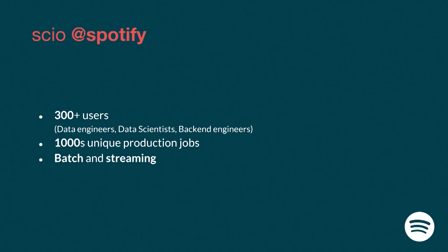A bit of context about Scio: at Spotify we have roughly 300 people using it — from data engineers to marketing engineers and also data scientists, so a very different kind of people. We have roughly 3,000 jobs in production, both batch and streaming. Outside of Spotify, a few big companies are using it — I think Dow Jones is using it, and 9gag if anyone likes memes. So other big companies alongside Spotify are actually using Scio to run jobs in production.